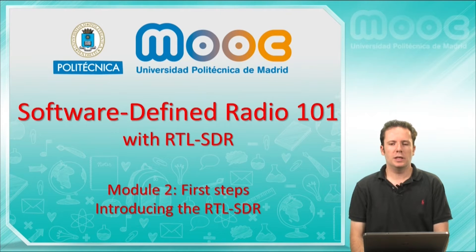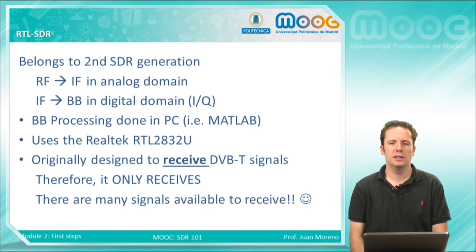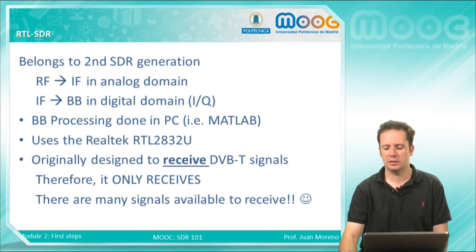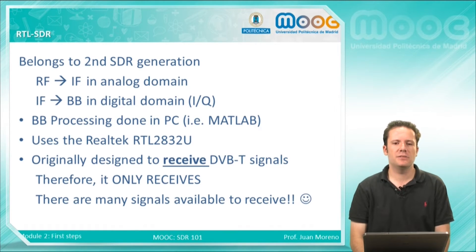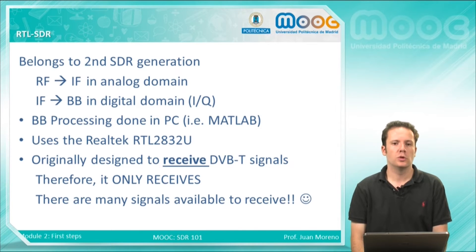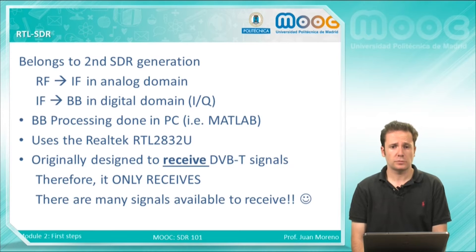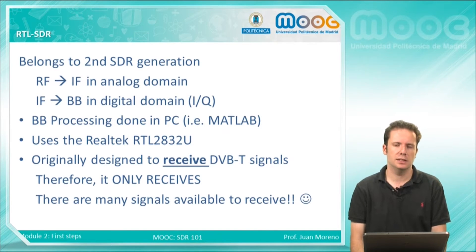In this video we will start to explain the hardware tool that we will use all along the course: the RTL-SDR radio. This device belongs to the second SDR generation, so we have an intermediate frequency in the analog domain and we do the conversion to baseband in the digital domain. All the baseband processing will be done in your PC, in the MATLAB tool.